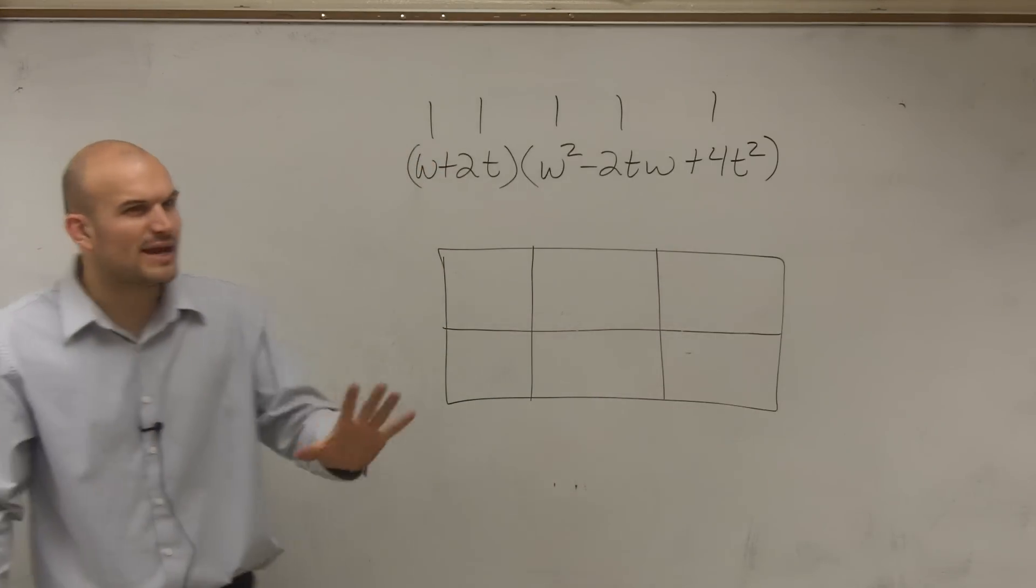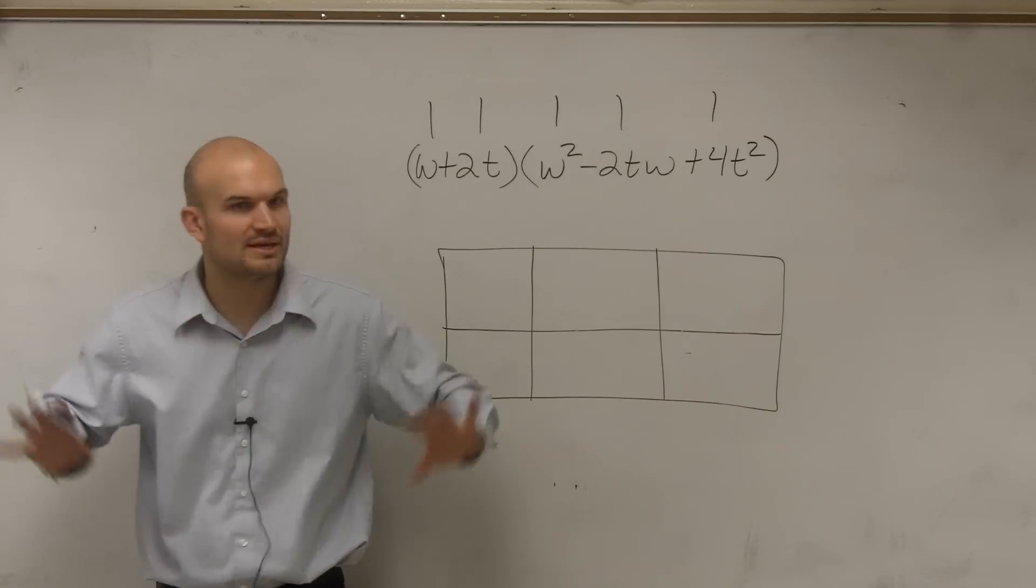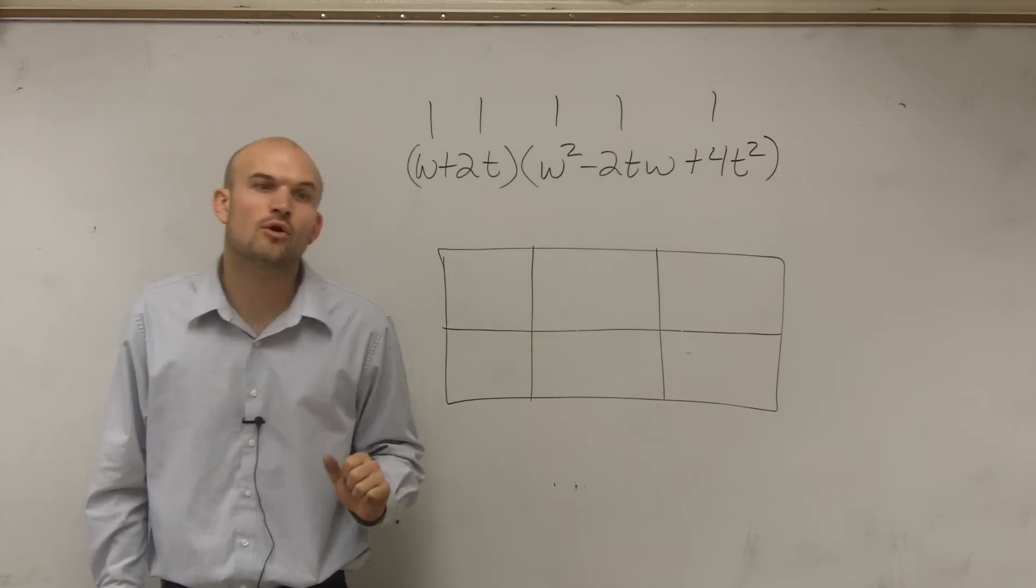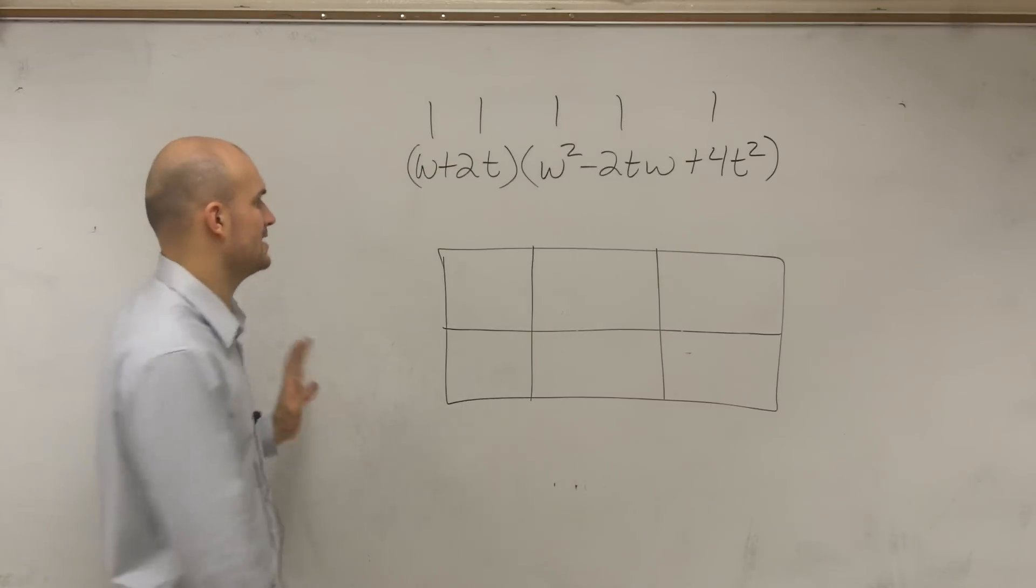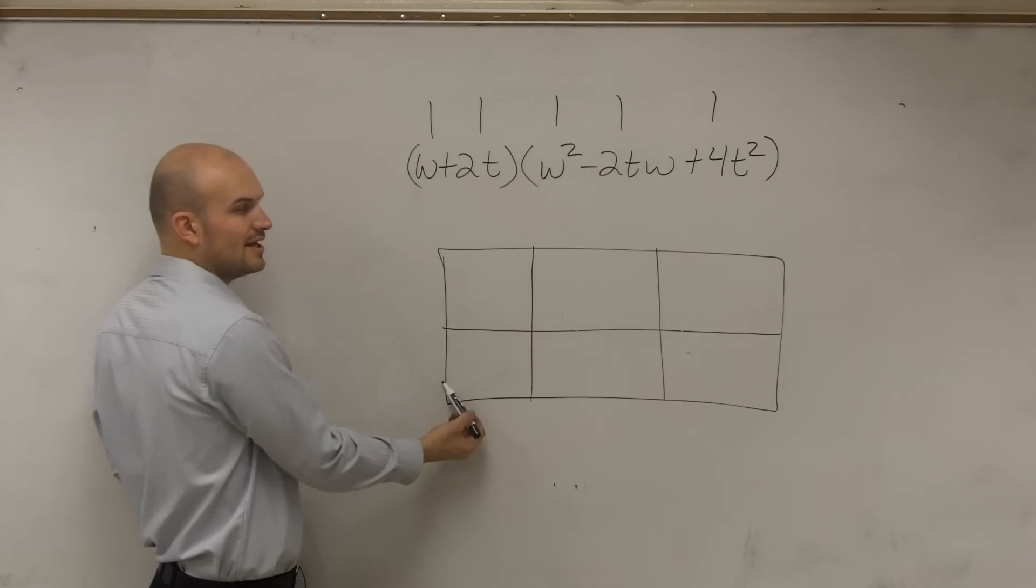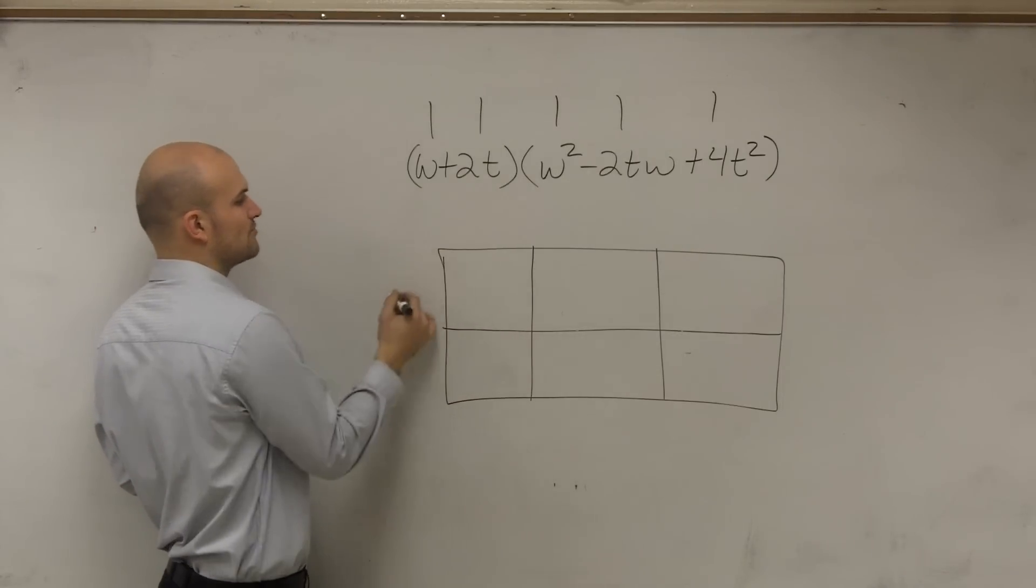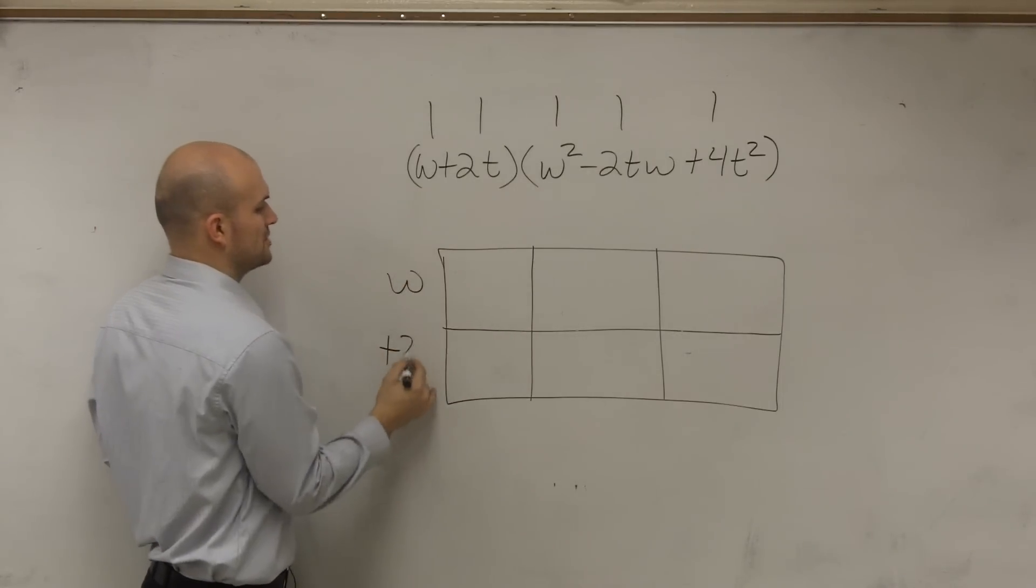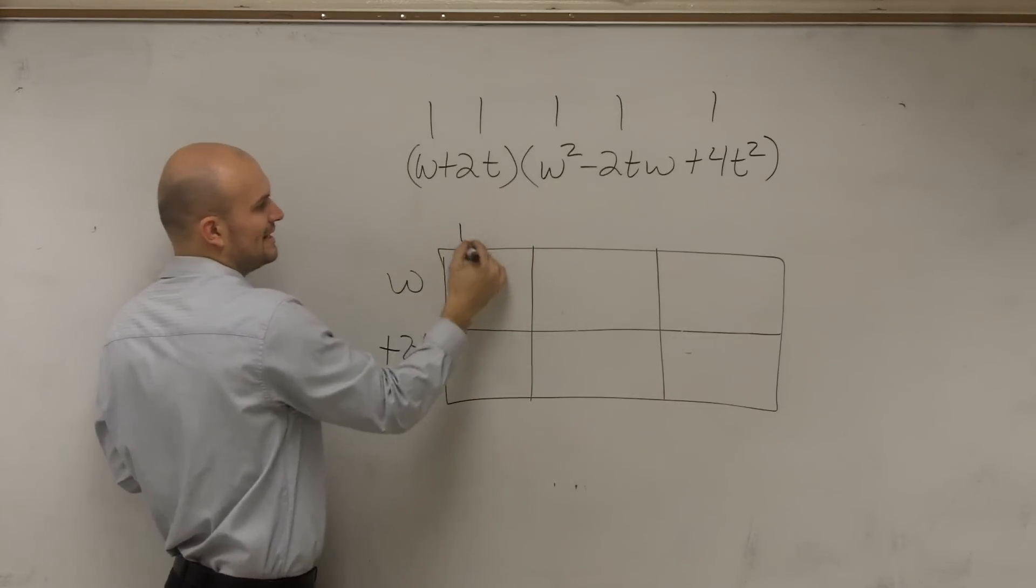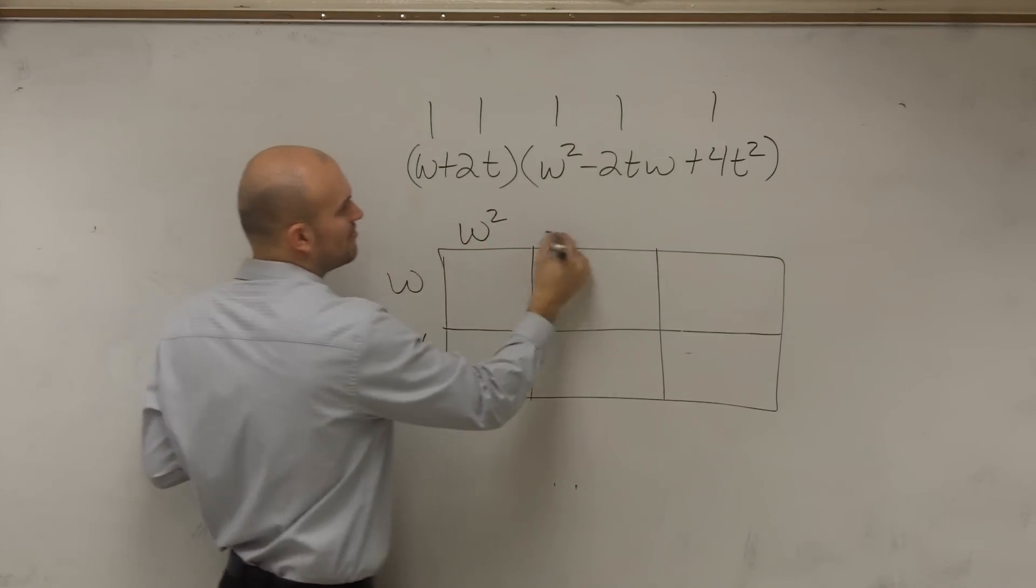And this is just a way to organize it. You guys can multiply by doing distributive property. That's perfectly fine. This is a very easy way to organize it, Brooke, by looking at it. So what you do is since I broke down one side into two terms, I can just write one term and then the other term. Then for the long side, I'll just write each term gets its own box.